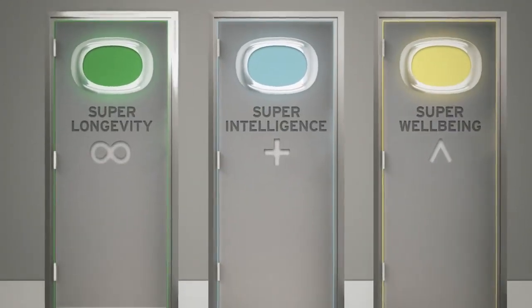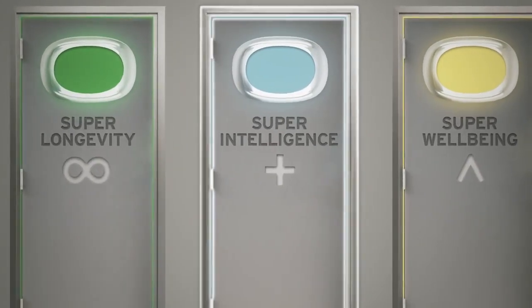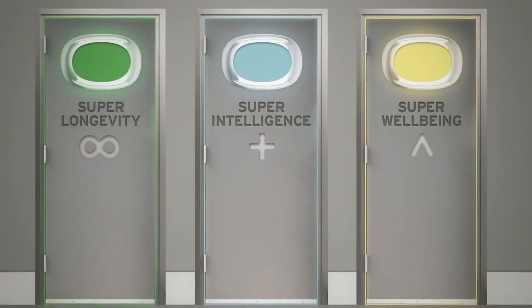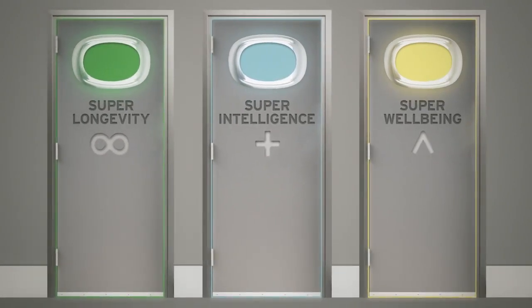We'll examine three central areas of transhumanist thought: super longevity, super intelligence, and super well-being. Dubbed the three supers because of their extraordinary transformative potential.